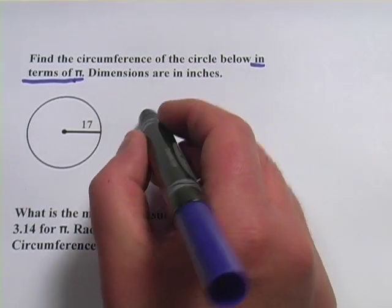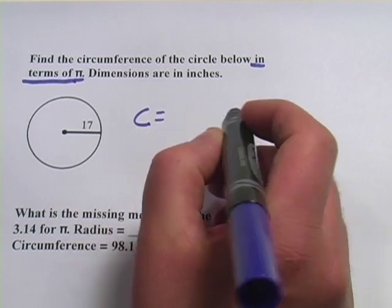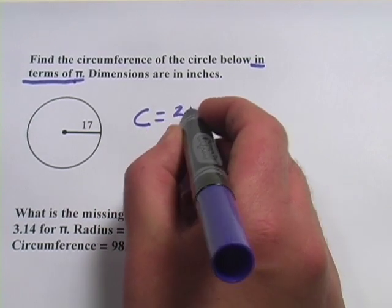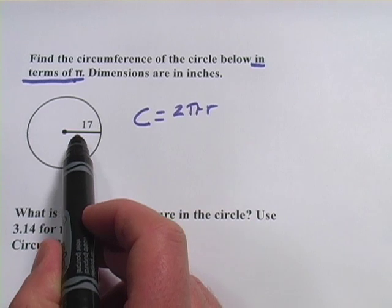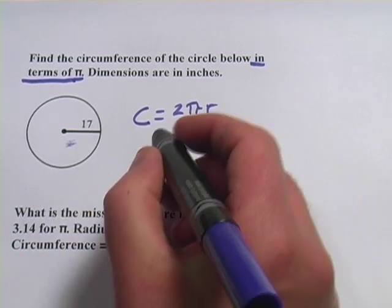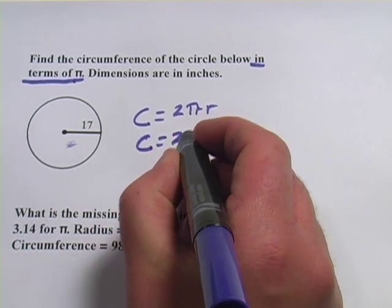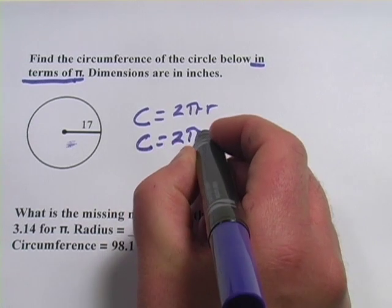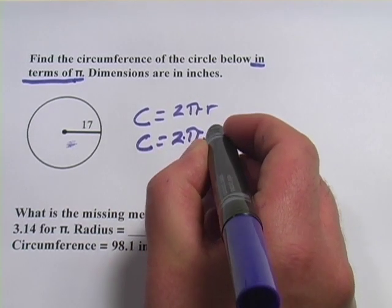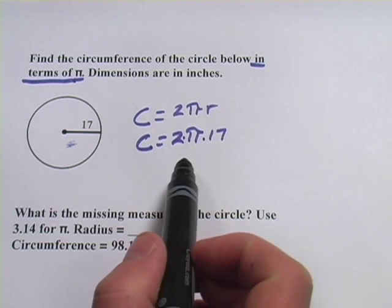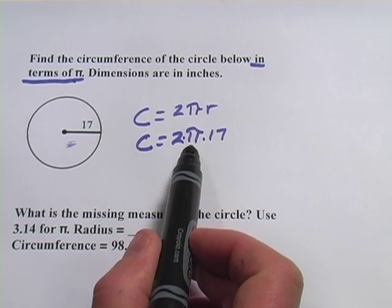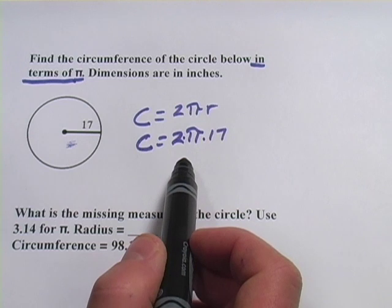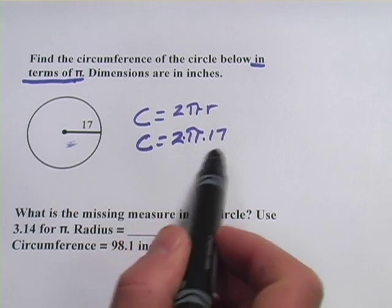You know that our formula for circumference of a circle is 2πr. Now here we know that the radius is 17, so we could plug that in. I'm just going to leave the pi there right now, so 2 times π times 17. Now if we were going to figure this out and get a decimal number, we would plug in some value for pi there, maybe 3.14, and multiply that by 2 and by 17.